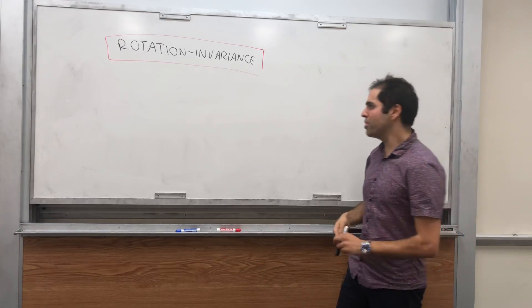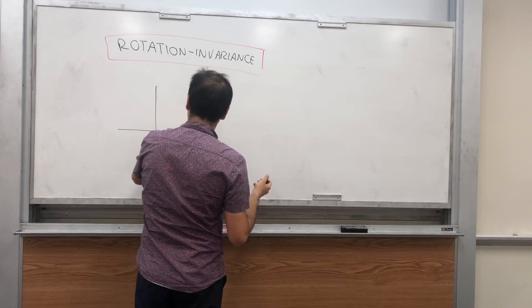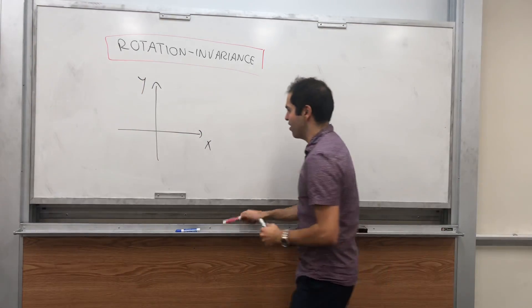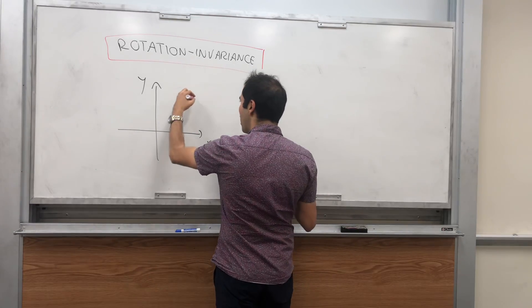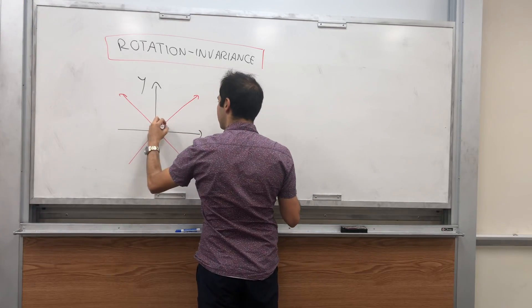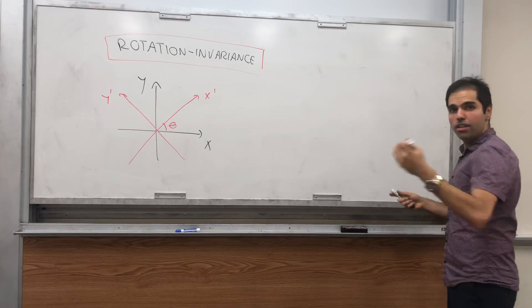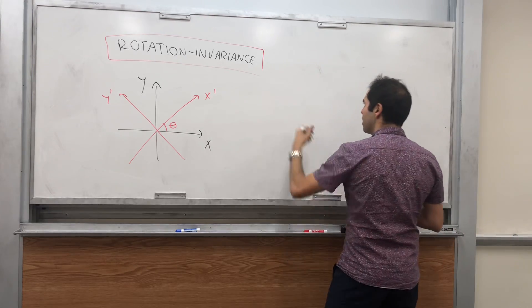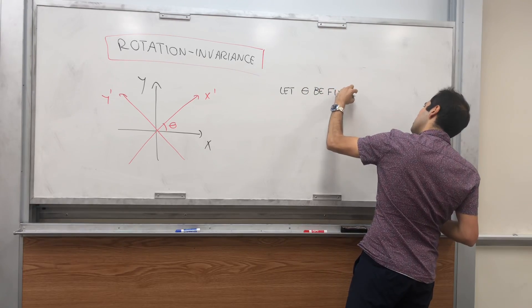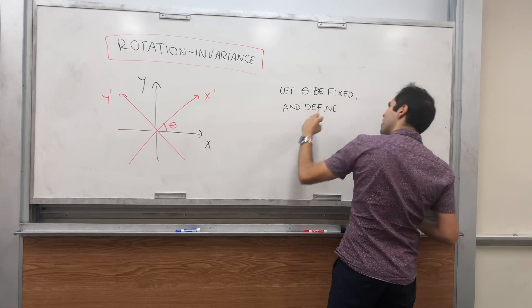So let me set up some notation. Remember from linear algebra, if you have coordinate axes x and y, then you can rotate them and get an explicit formula for that. Suppose you take the axes x and y and you rotate them by an angle of theta, where theta is fixed. Then you get new axes x prime and y prime. We do have an explicit formula, so let theta be fixed and define x prime and y prime as follows.